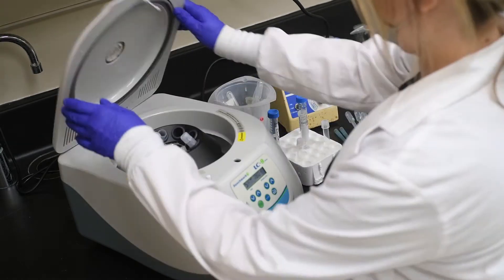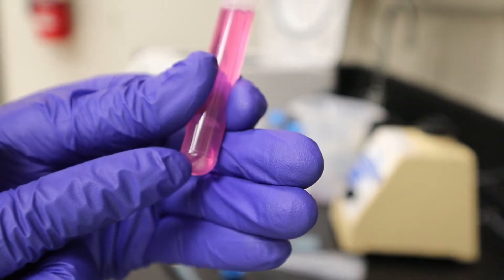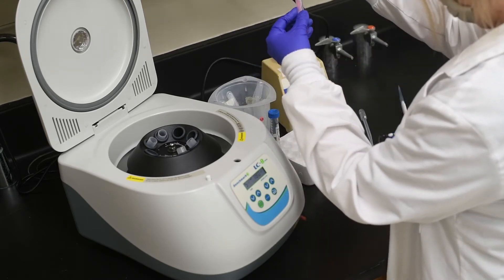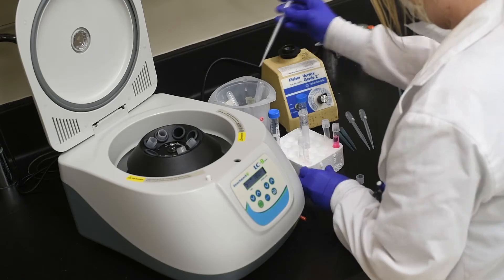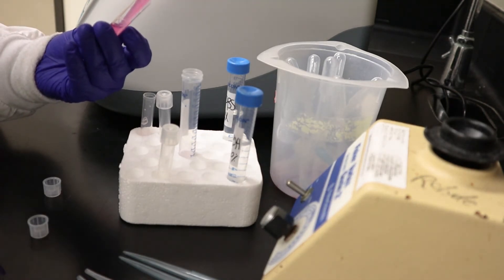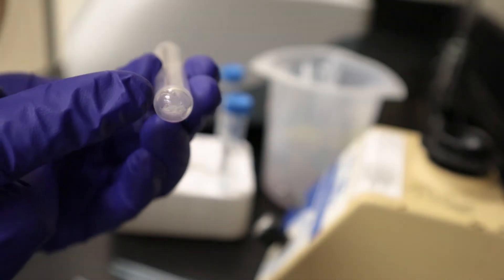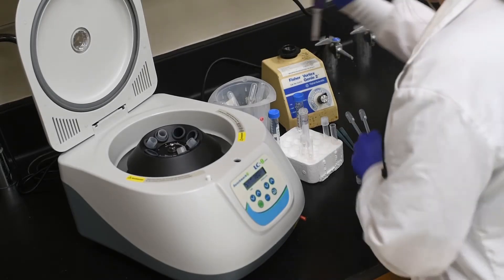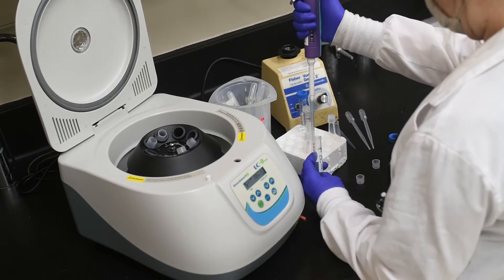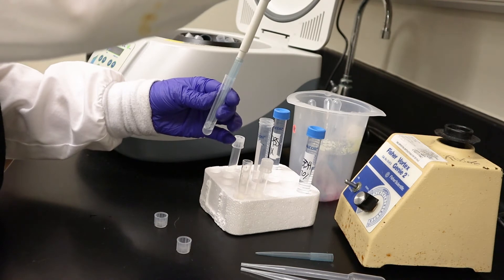After centrifugation, I carefully removed the supernatant without disturbing the pellet. Once the tube was empty with only the pellet present, I added 1 milliliter of PBS. I triturated my cells within the PBS to resuspend them and spun them down for 5 minutes into a pellet.